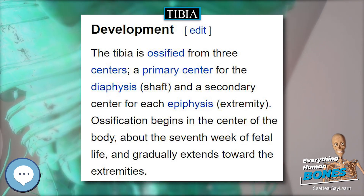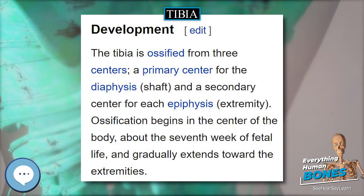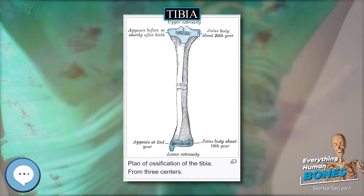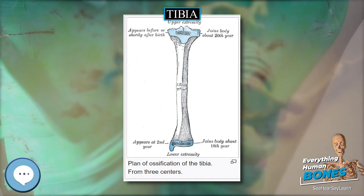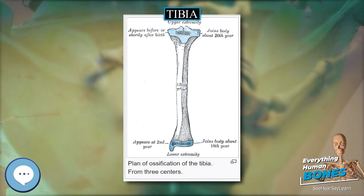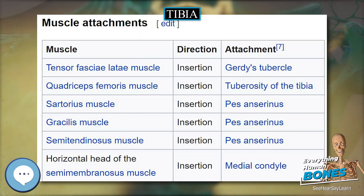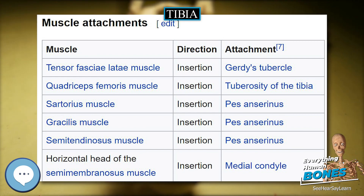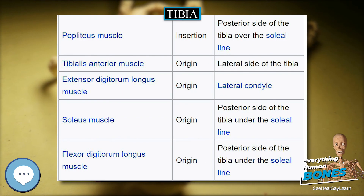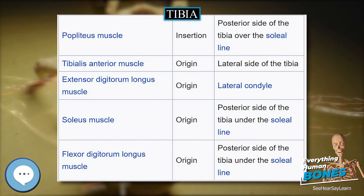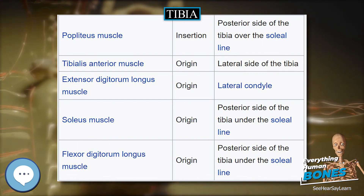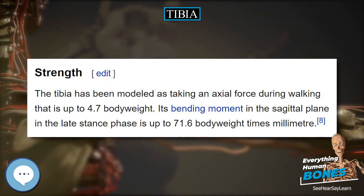Other animals. The structure of the tibia in most other tetrapods is essentially similar to that in humans. The tuberosity of the tibia, a crest to which the patellar ligament attaches in mammals, is instead the point for the tendon of the quadriceps muscle in reptiles, birds, and amphibians, which have no patella.